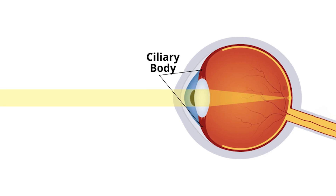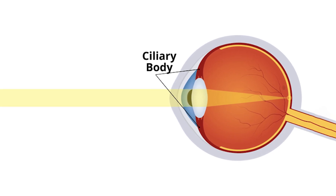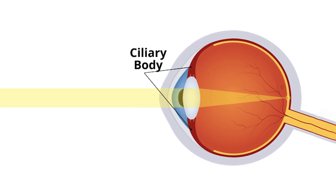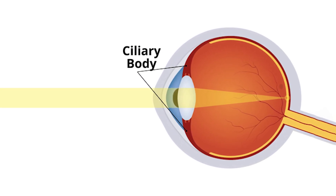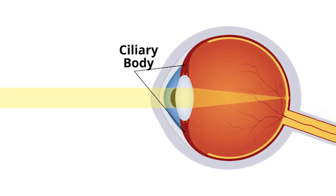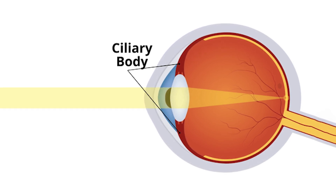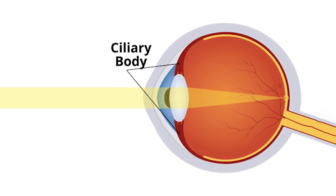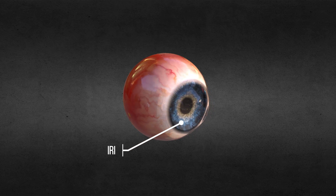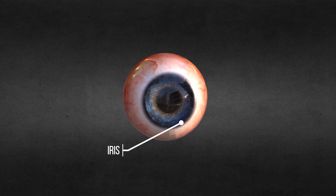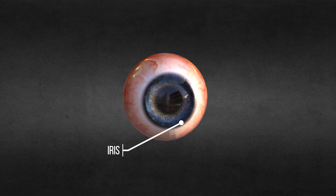The ciliary body, attached to the choroid, produces the aqueous humor that nourishes the eye and helps maintain intraocular pressure, and its muscular components adjust the shape of the lens for focusing. The iris, the colored part of the eye, regulates the amount of light entering the eye by altering the size of the pupil, adapting to various lighting conditions.